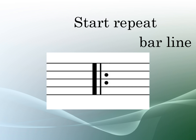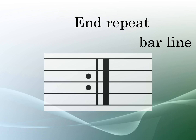Finally we'll look at repeat bar lines. A start repeat bar line has two lines, the first thicker than the second, and two dots that are placed directly above and below the middle line of the stave. As the name indicates, these types of bar lines are used at the start of a section that should be repeated. An end repeat bar line is very similar to the start repeat bar line but shows that this is the end of the section that should be repeated.